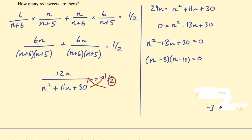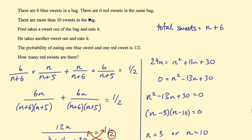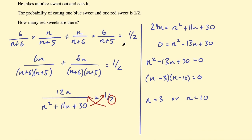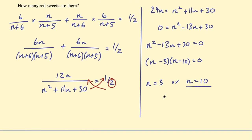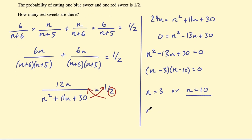So according to this quadratic, n could equal 3 or n could equal 10. Now go back to the question and it says there are more than 10 sweets in the bag, so n cannot equal 3 because that would only give me 9 sweets. So n must equal 10, and the question says how many red sweets are there.